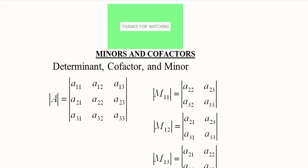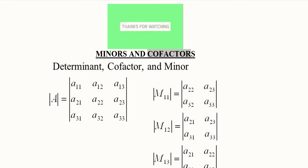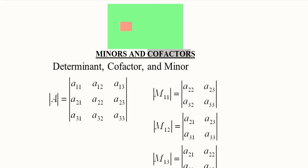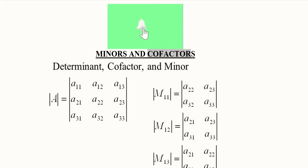This video is about minors and cofactors, which are very important concepts in finding the inverse of a matrix or the division of two matrices. Minors are smaller parts of the original matrix and cofactors are related factors. The determinant is something we have already found, and from that we can find the minor and the cofactor.